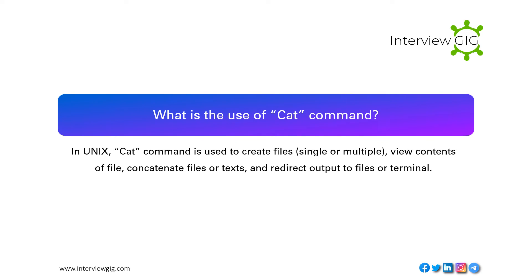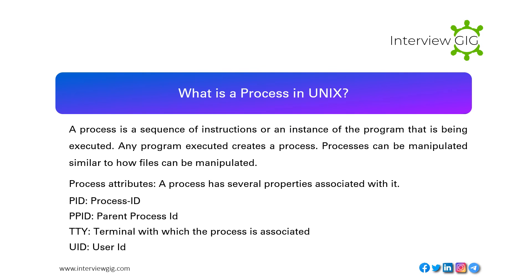What is the use of the cat command in Unix? The cat command is used to create files (single or multiple), view contents of a file, concatenate files or text, and redirect output to files or terminal. What is a process in Unix? A process is a sequence of instructions, or an instance of a program that is being executed. Any program executed creates a process; processes can be manipulated similar to how files can be manipulated.